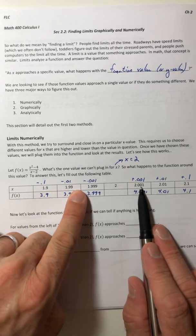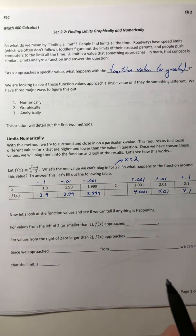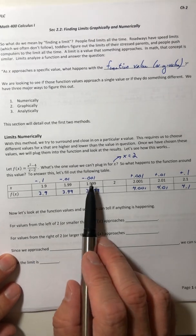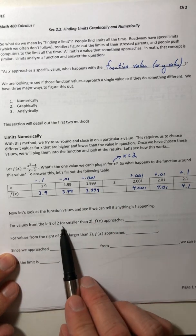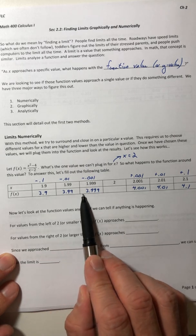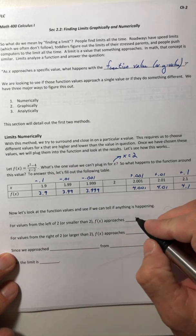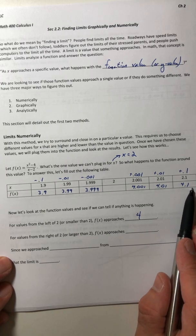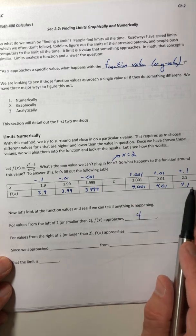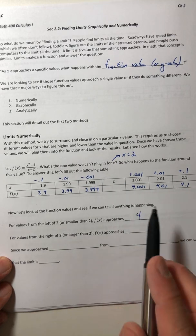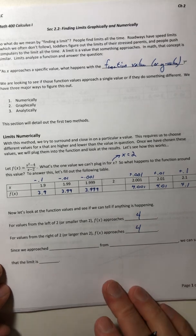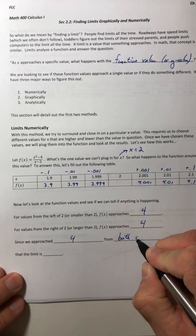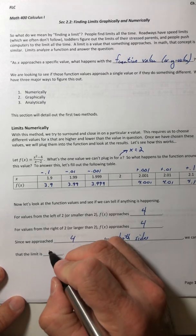Okay. So the x values are getting closer and closer to 2. Let's look at the y values, or the function values, and see if anything is happening. So for values from the left of 2, literally the left of 2, these are on the left, here's 2, these are on the left, so those are all smaller. If you look at the function values, what are they getting closer and closer to? Well, they're getting closer to, or approaching, 4. And for values from the right of 2, over here on the right, or larger, as x gets closer to 2, the function values, or the y values, also get closer to, or approach, 4. So since we approached 4 from both sides, we can say that the limit is 4.